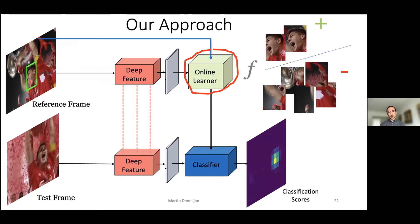The difficulty is: how can we use background negative information to learn a more powerful, more robust representation of the target object? The answer is to learn a discriminative classifier of our target. But the challenge is that we have a learning problem for our target embedded inside another learning problem — the end-to-end training of our full architecture. This is learning to learn, or what's called meta-learning, which naturally comes in here. This is a very general concept that generalizes to many other tasks.